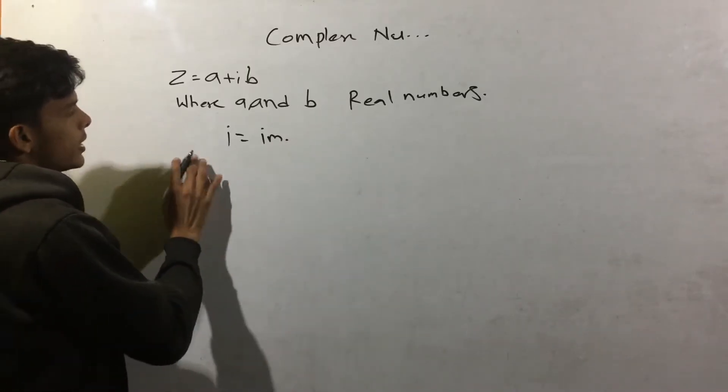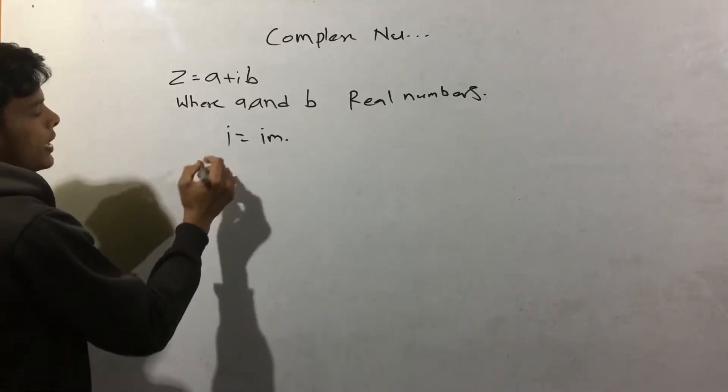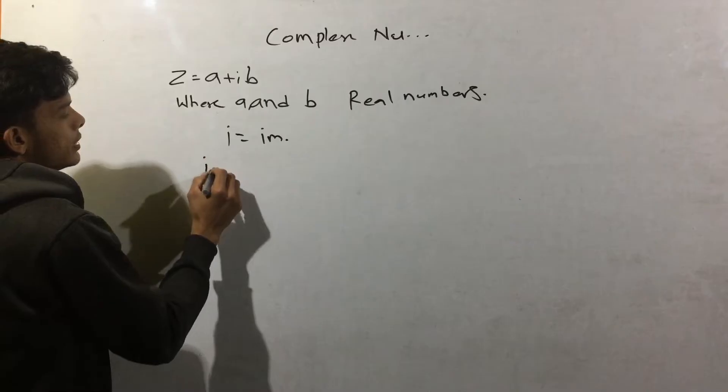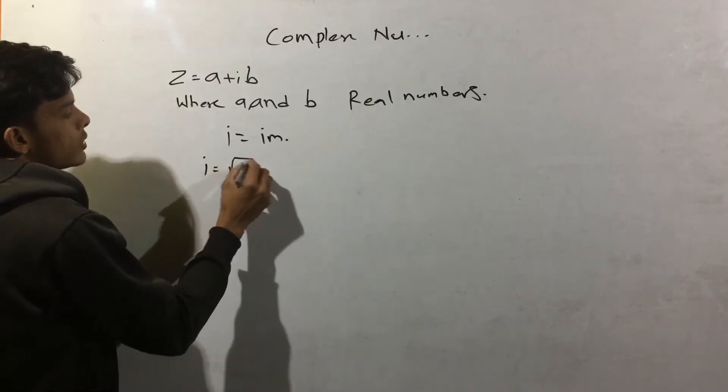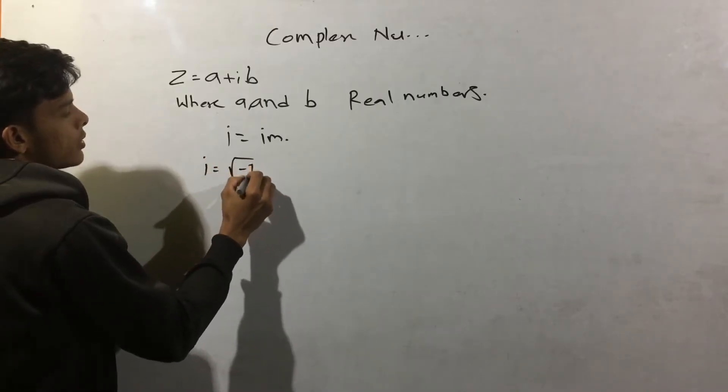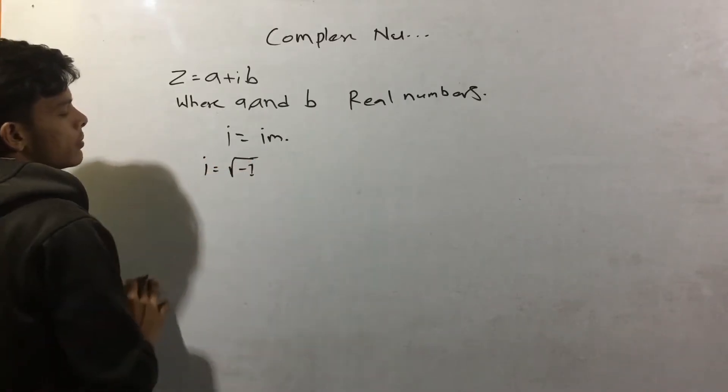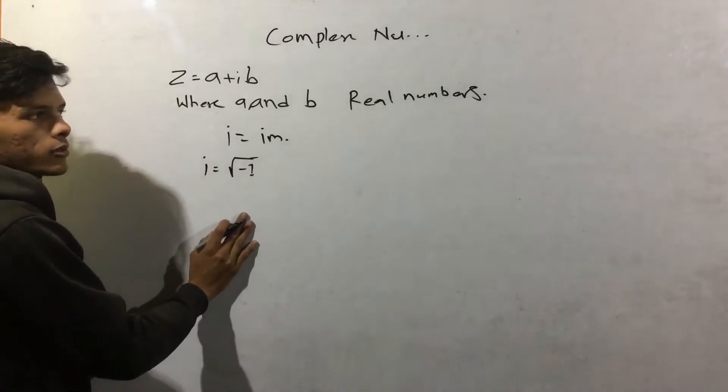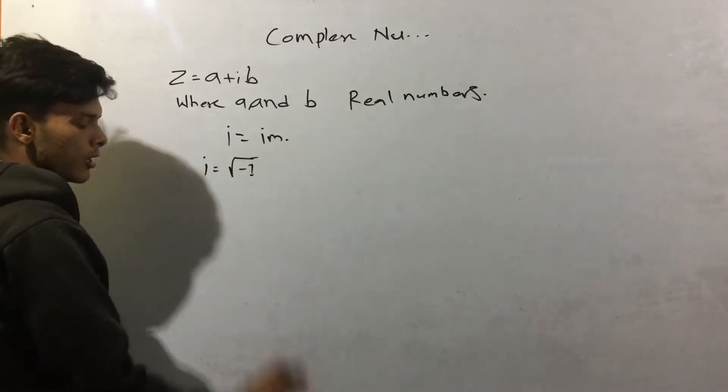Here, i is equal to the square root of minus 1. So i is equal to root under minus 1.